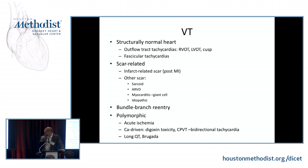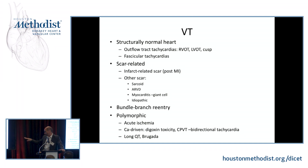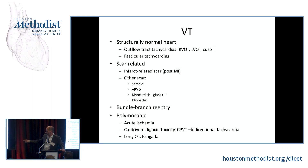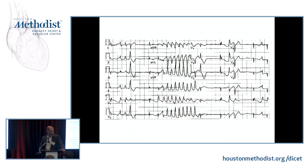Polymorphic forms of ventricular tachycardia occur most commonly in the context of acute ischemia, long QT, calcium-driven arrhythmias in the setting of digoxin toxicity, or a condition called catecholaminergic polymorphic ventricular tachycardia, which is bidirectional.